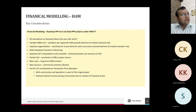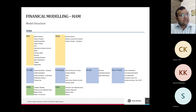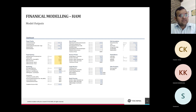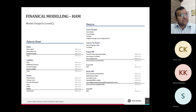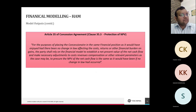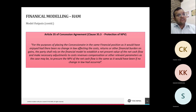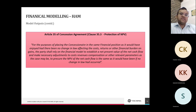These snapshots show what a ropeway PPP financial model looks like — the recording will be made available to all registered participants. The financial model is important because Article 35 of the concession agreement deals with protection of NPV in case of change in law. If the authority introduces any change in law, the financial model is the tool used to ensure that reimbursement to the private sector restores the original NPV. This makes a robust, authority-submitted financial model a necessity for these projects.